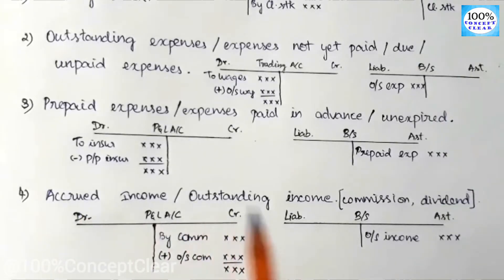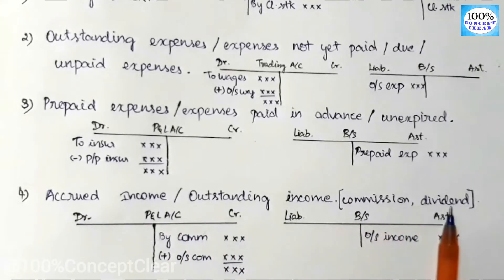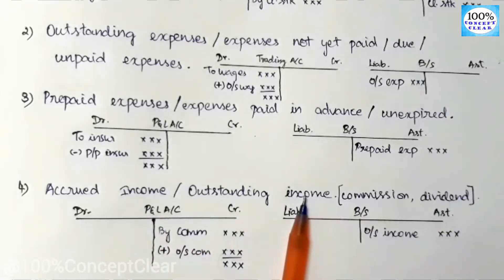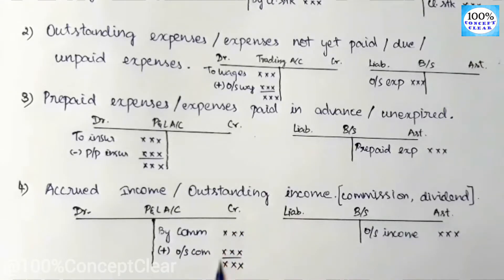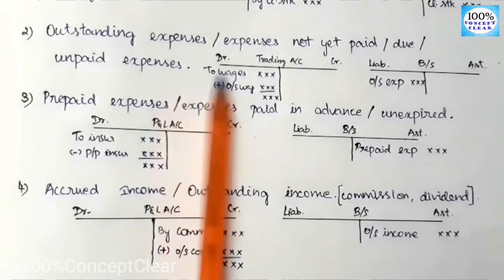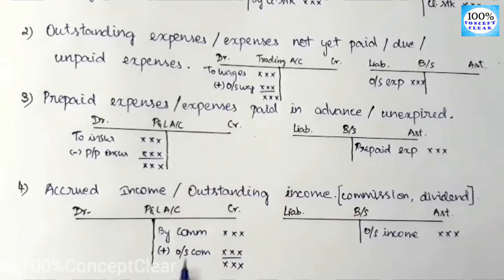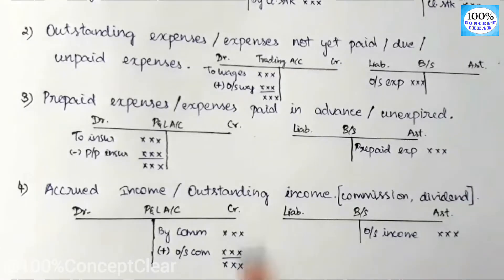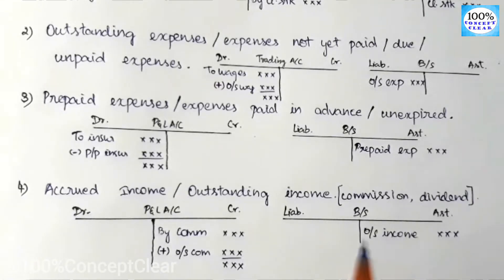The next adjustment is accrued income, also called outstanding income. This includes outstanding commission, dividend, or other income not yet received. Accrued income appears in the P&L account on the credit side, because it is income. If there is a commission received amount in the trial balance, we will add the outstanding income to that amount. The outstanding income also appears on the balance sheet as an asset, because the income is receivable by the business.